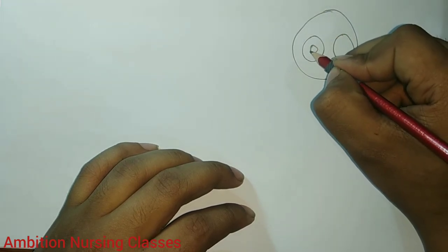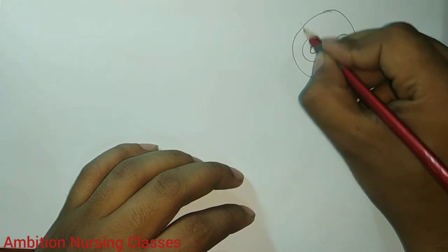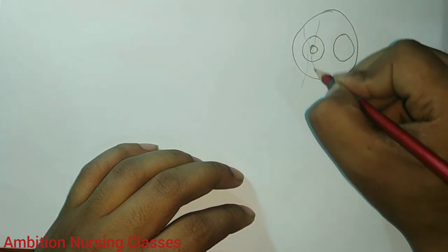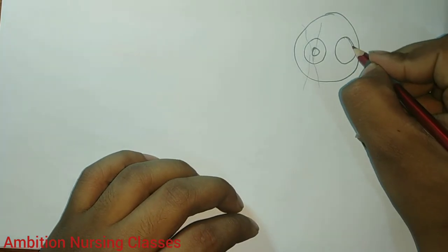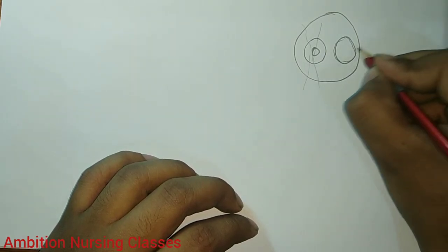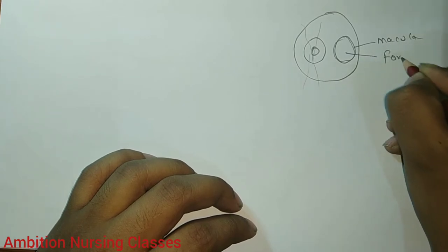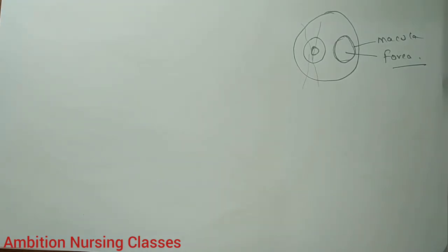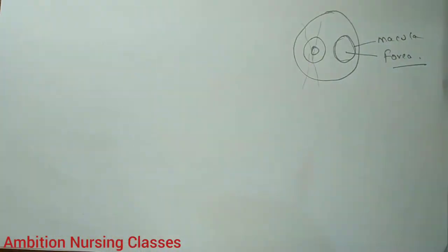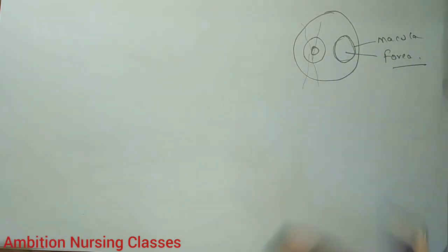With the ophthalmoscope, you will see the optic disc, the optic cup, and blood vessels — both artery and vein. And this one is actually your macula. The center of the macula is the fovea. The fovea is where you will have the clearest image, meaning the maximum amount of light falls here, giving you perfect vision.